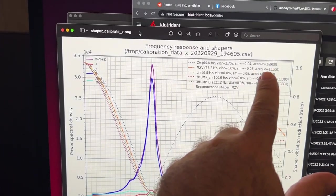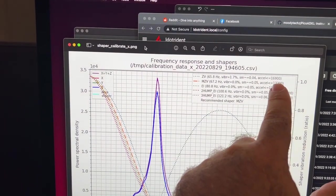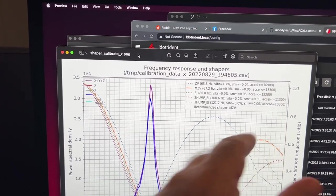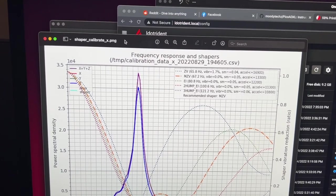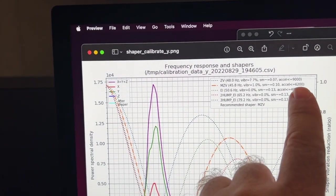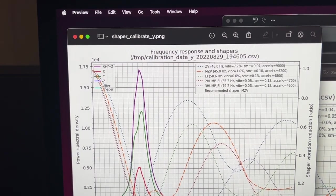Something else you may want to do after you run input shaper is increase your max acceleration. So you can see here with the recommended input shaper on mine, which was MZV on the X, I could go as high as 13,000. That seems really high. I don't think I'm going to go that high but it's interesting to see that. On my Y I can basically take it up to 6200 is what it's recommending. So I'm probably going to increase it.